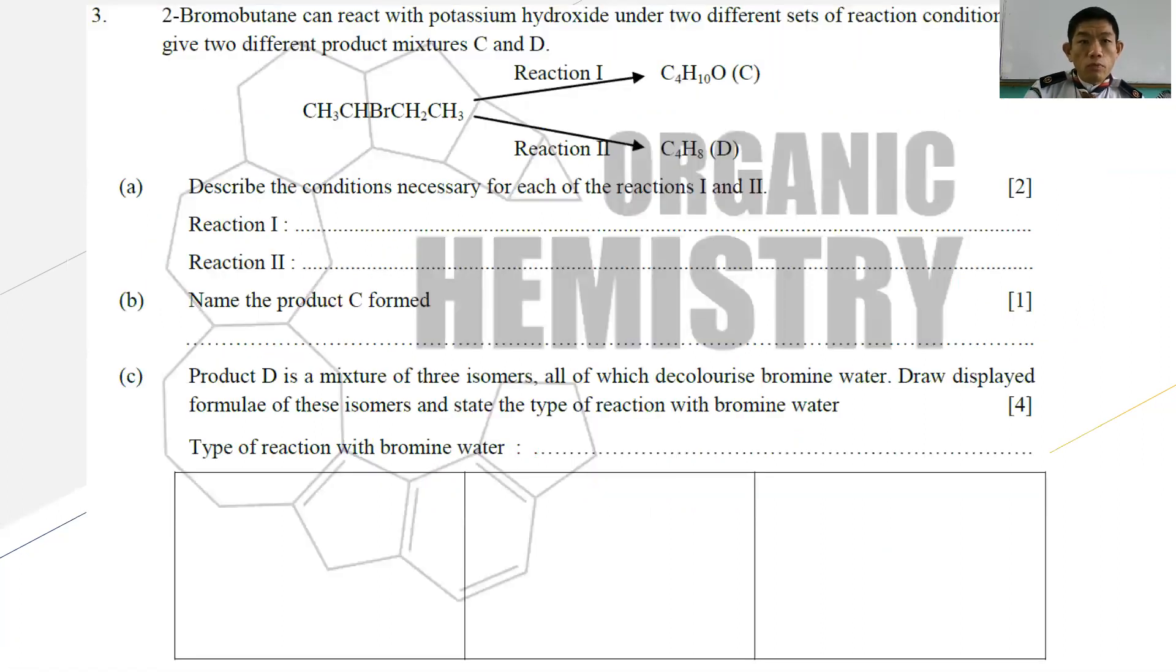Question number three: 2-bromobutane can react with potassium hydroxide under different sets of reaction conditions to give two different products, mixture C and D. Reaction 1 gives C4H10O which is C, and reaction 2 gives C4H8 which is product D. Describe the condition necessary for number 1 and number 2. Both are under potassium hydroxide, but under different conditions they form different products. For number 1, it is expected to be a hydrolysis reaction, so the condition is just under reflux. For number 2, you are forming C4H8 which is an alkene, so it is definitely an elimination reaction. The conditions required are ethanolic under reflux.